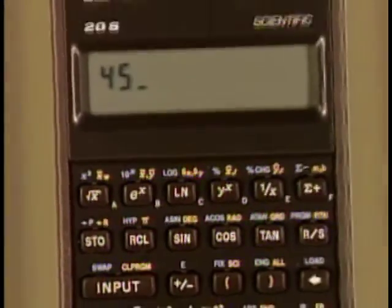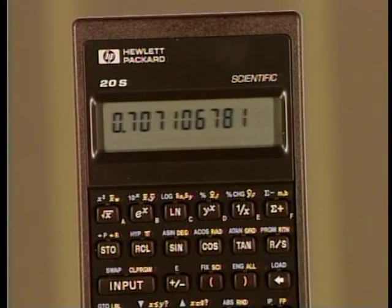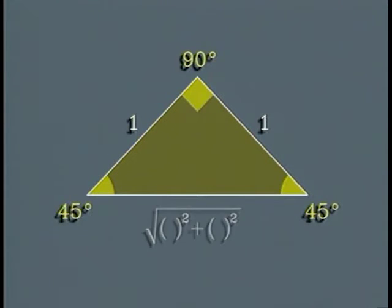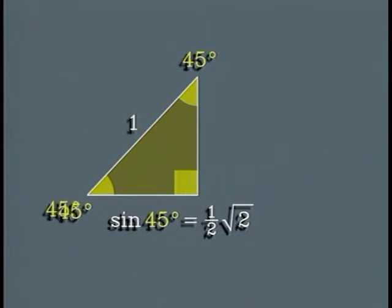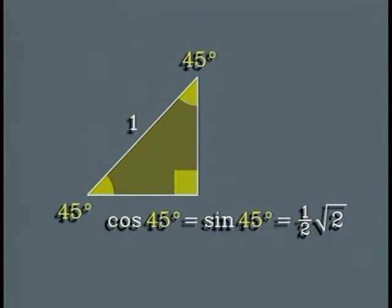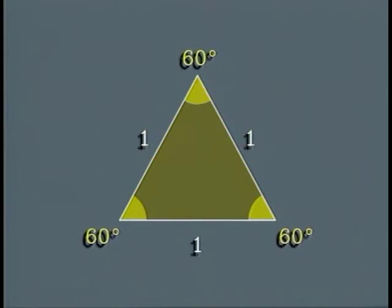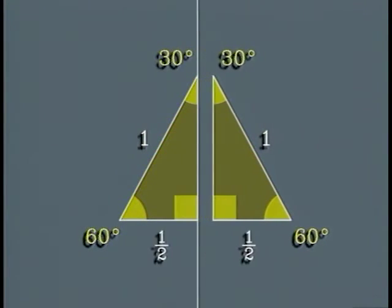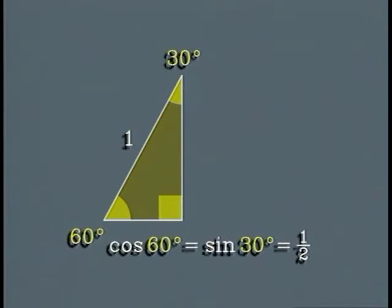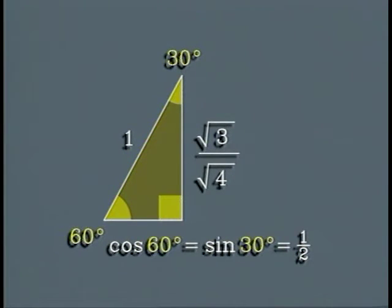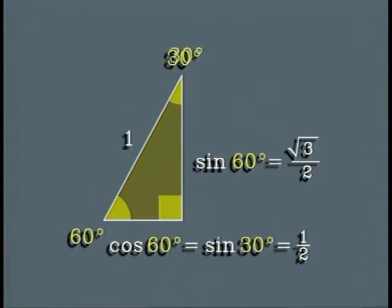When your pocket calculator displays the sine or cosine of 45 degrees, the result is only an approximation. To find the exact value, apply the Pythagorean theorem to a right isosceles triangle. The hypotenuse has length square root of two. Divide the triangle in half, and we find the sine of 45 degrees is one half the square root of two — so is the cosine. Sines and cosines of many special angles can be found exactly. In an equilateral triangle, each angle is 60 degrees. Divide the triangle in half to find the sine of 30 degrees, which is also the cosine of 60 degrees. Use the Pythagorean theorem to calculate the length of the other leg, and we find the sine of 60 degrees, which is also the cosine of 30 degrees.